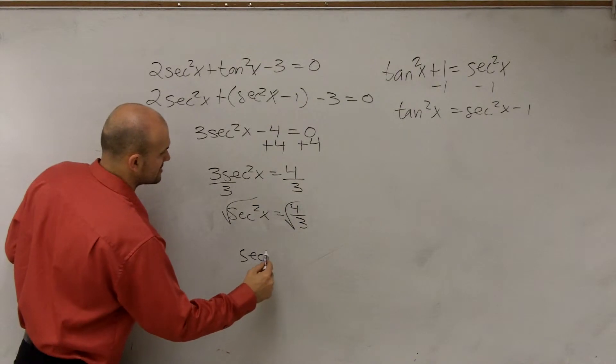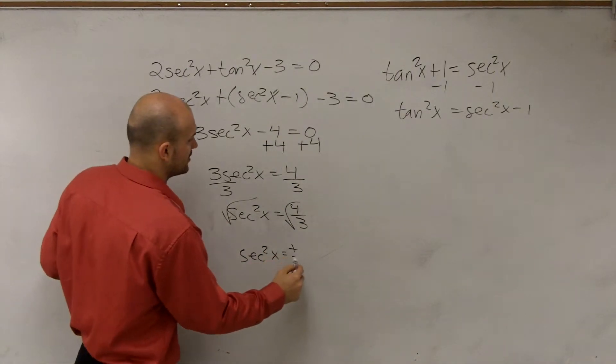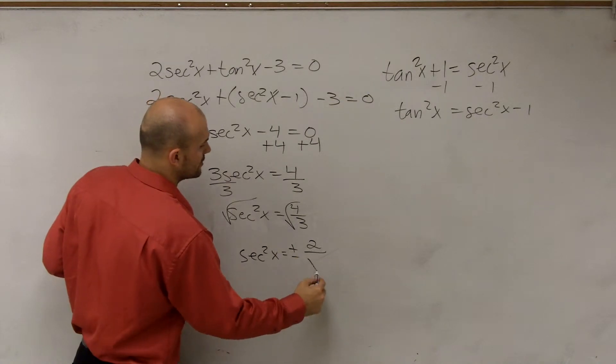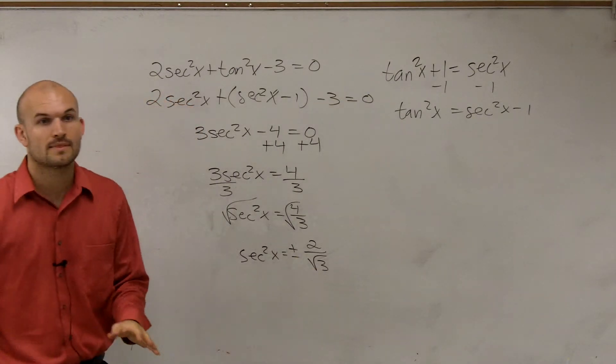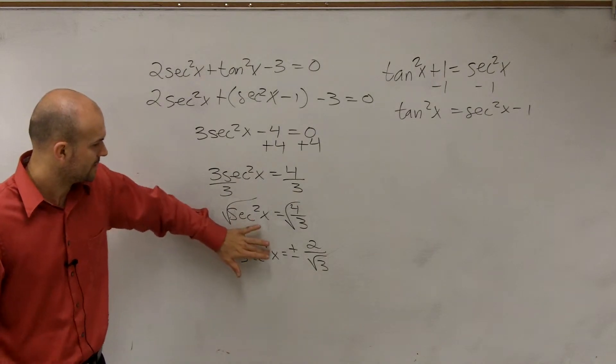Square root both sides. Secant of x equals plus or minus 2 over square root of 3. Yes, thank you.